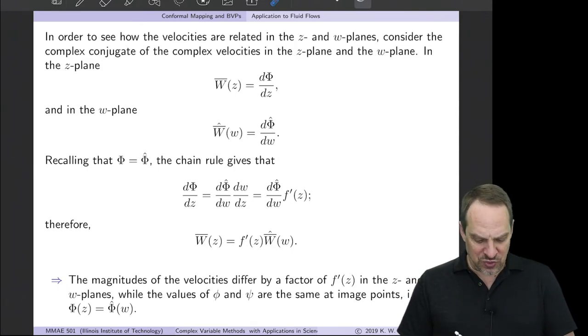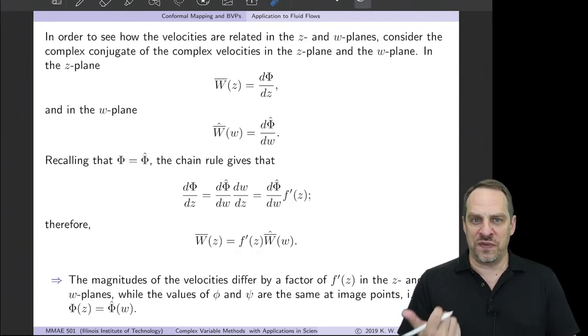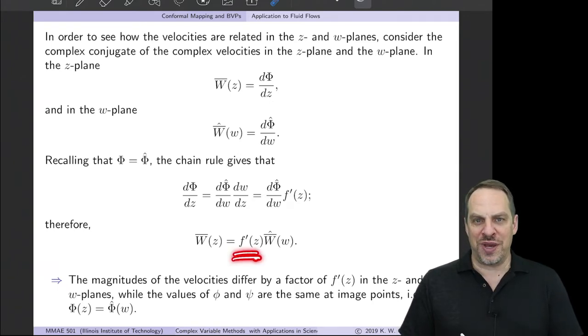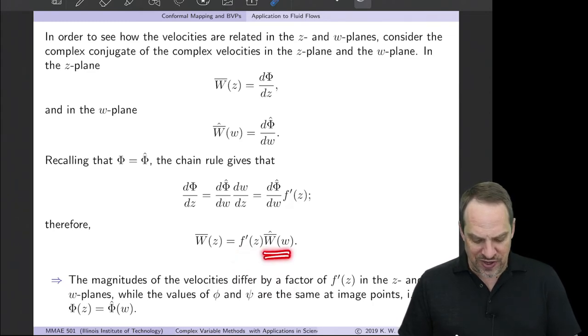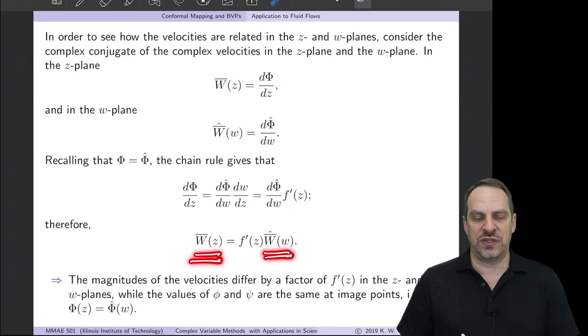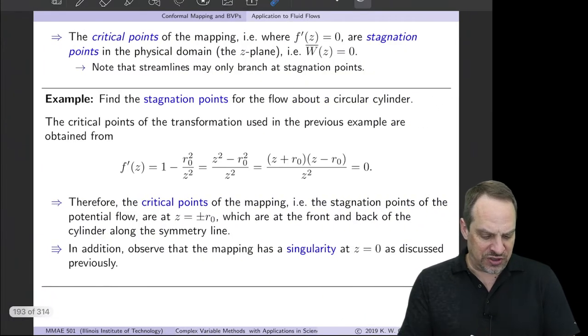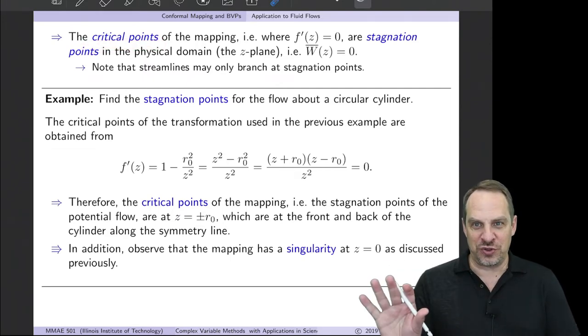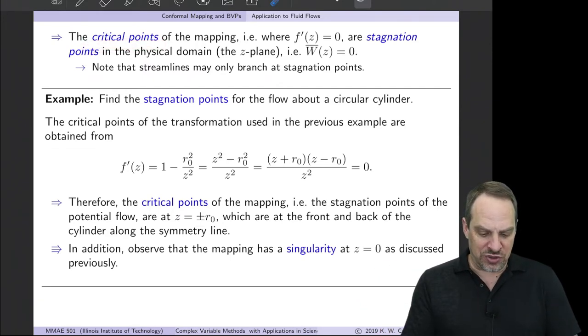But take a look at what happens when f prime of z is equal to zero. What is that? Well, that's the critical point of the mapping. Okay, so what that's saying is, if I have a critical point of the mapping, which is f prime of z is zero, then the values of the velocities, no matter what they are in the w plane, they're going to be zero at the corresponding image points in the z plane. So that leads to a very interesting conclusion. The critical points of our mapping, which seem to have nothing to do with the physical problem at all, actually correspond to stagnation points in the physical domain.